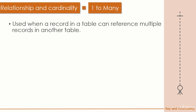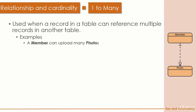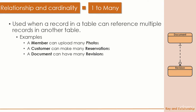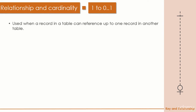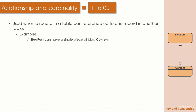The one-to-many relationship is used when a record in one table can reference multiple records in another table. For example: a member can upload many photos; a customer can make many reservations; a document can have multiple revisions. One-to-many and its cardinality is probably the most commonly used relationship type.